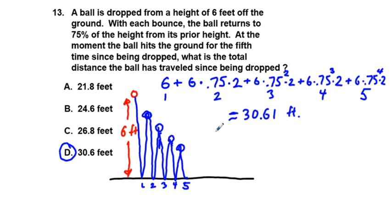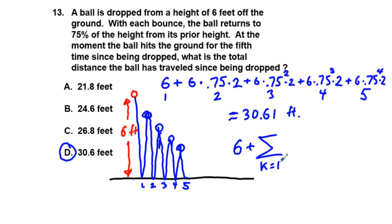There's another way to do this using the summation feature of the calculator. We can write this in summation form as: six — for the initial drop — plus the summation from k equals one to four of six times two times 0.75 to the power of k.